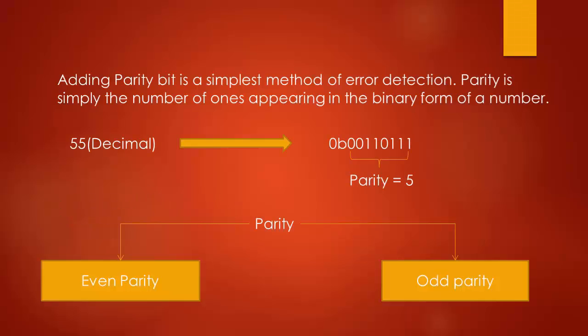Adding a parity bit is the simplest method of error detection. Parity is simply the number of ones appearing in the binary form of a number. For example, the number 55 has this binary form, so the parity is 5, which is an odd number — just count the number of ones appearing in this pattern. There are two options in parity selection: even parity and odd parity.